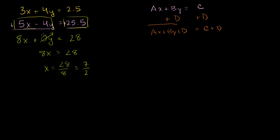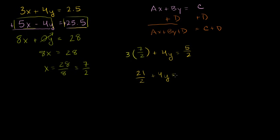Now we solve for y by substituting x equals 7/2 back into the top equation. So 3 times 7/2 plus 4y equals 2.5, which I'll write as 5 halves. That gives 21/2 plus 4y equals 5/2. Subtract 21/2 from both sides: 4y equals 5/2 minus 21/2, which is negative 16/2, or negative 8.